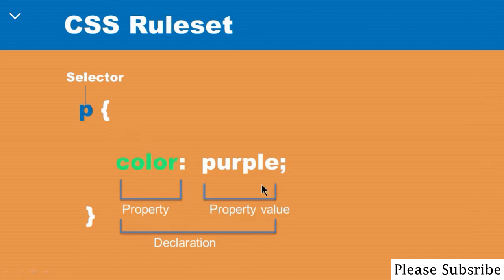It contains different parts. The color here — you can apply any property. Color is just one of many properties that you can use to style HTML elements. In this illustration, I am styling the paragraph element with the color property, which means I'm going to change the color of all elements that have the P tag. So color is referred to as a property. You use a colon — it's very important. You have to separate the property from the property value with a colon. Once you've indicated the property, you have to give it a value, and this is known as the property value.